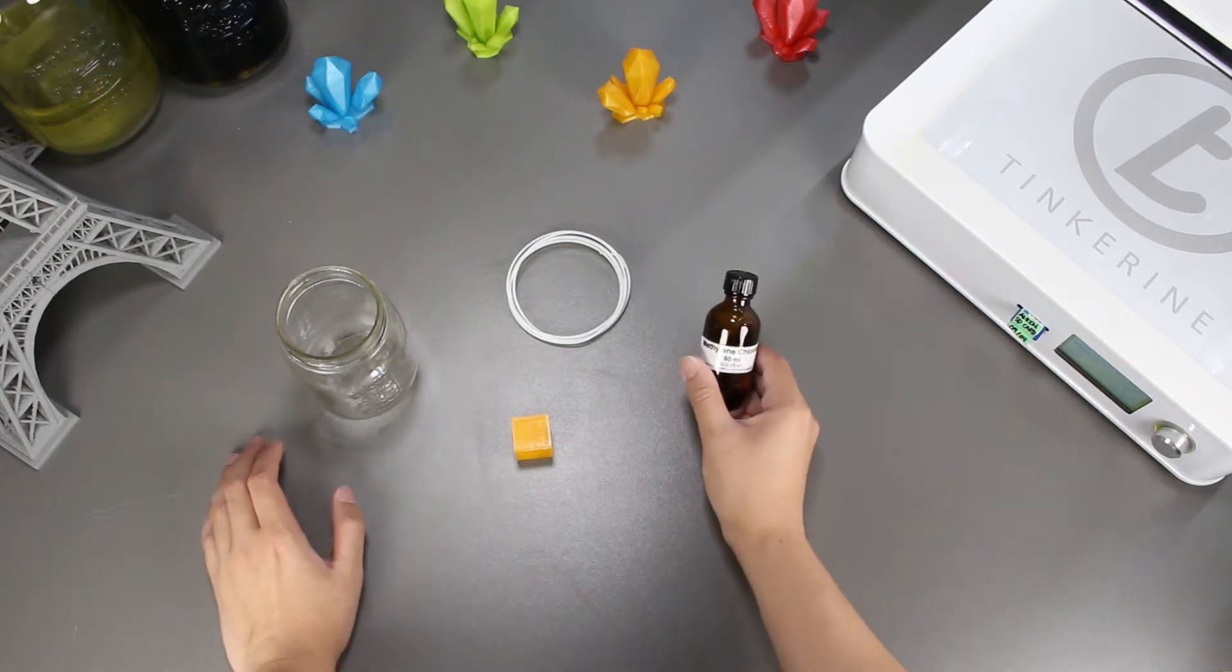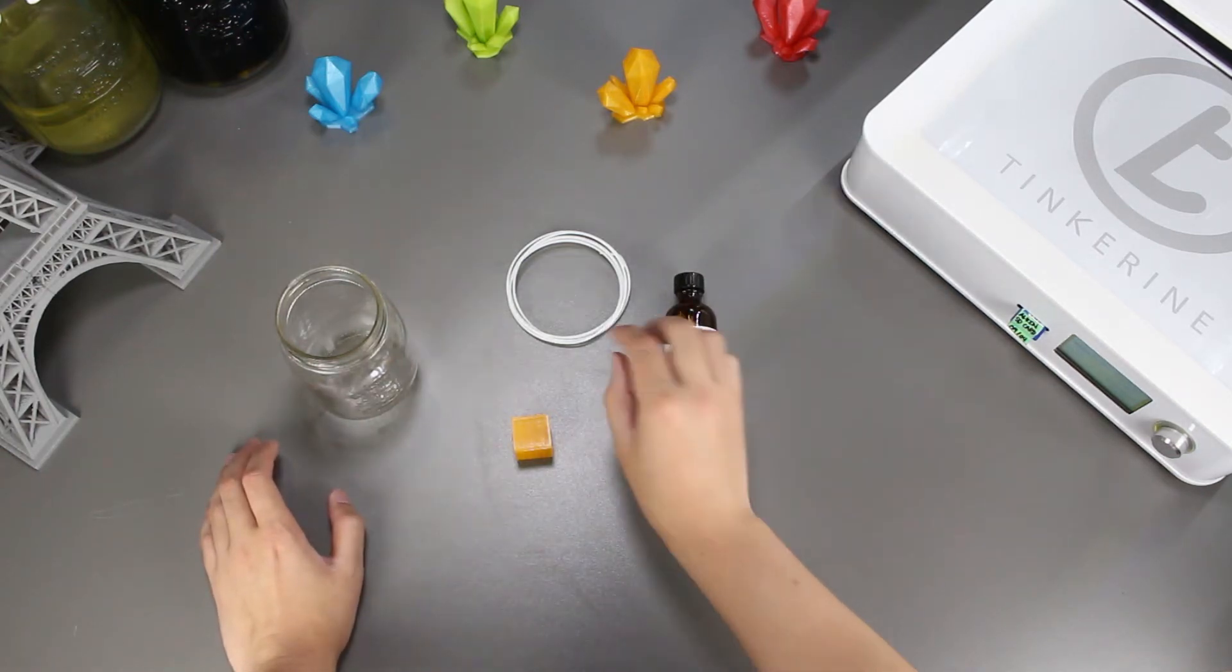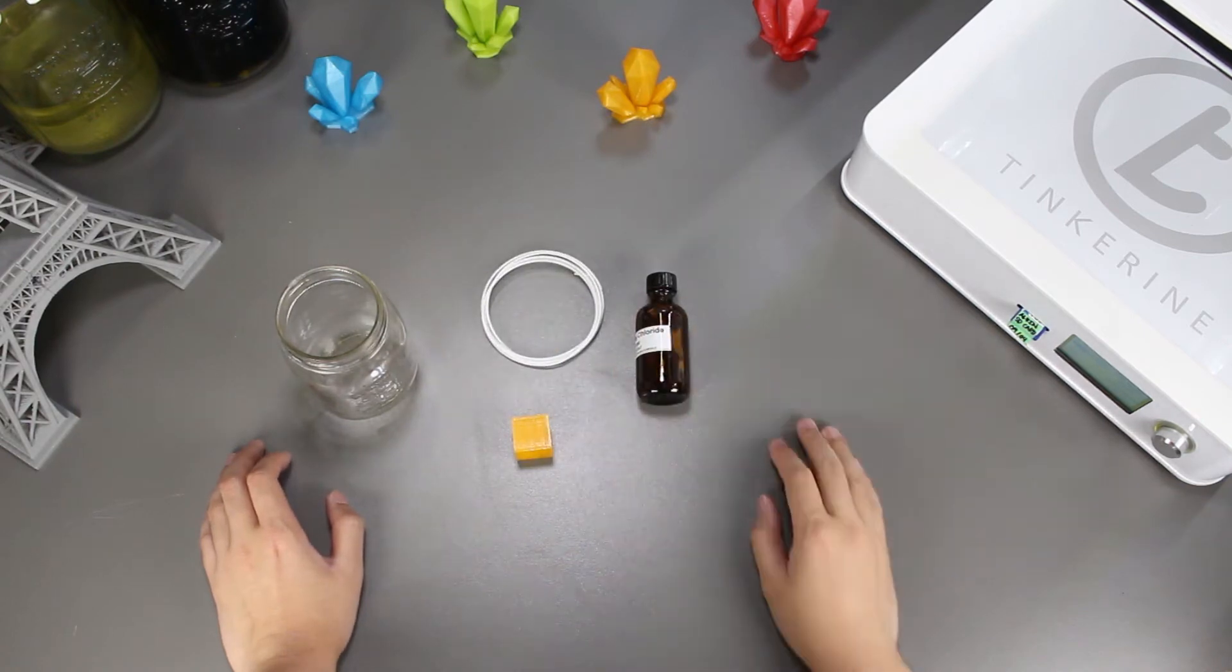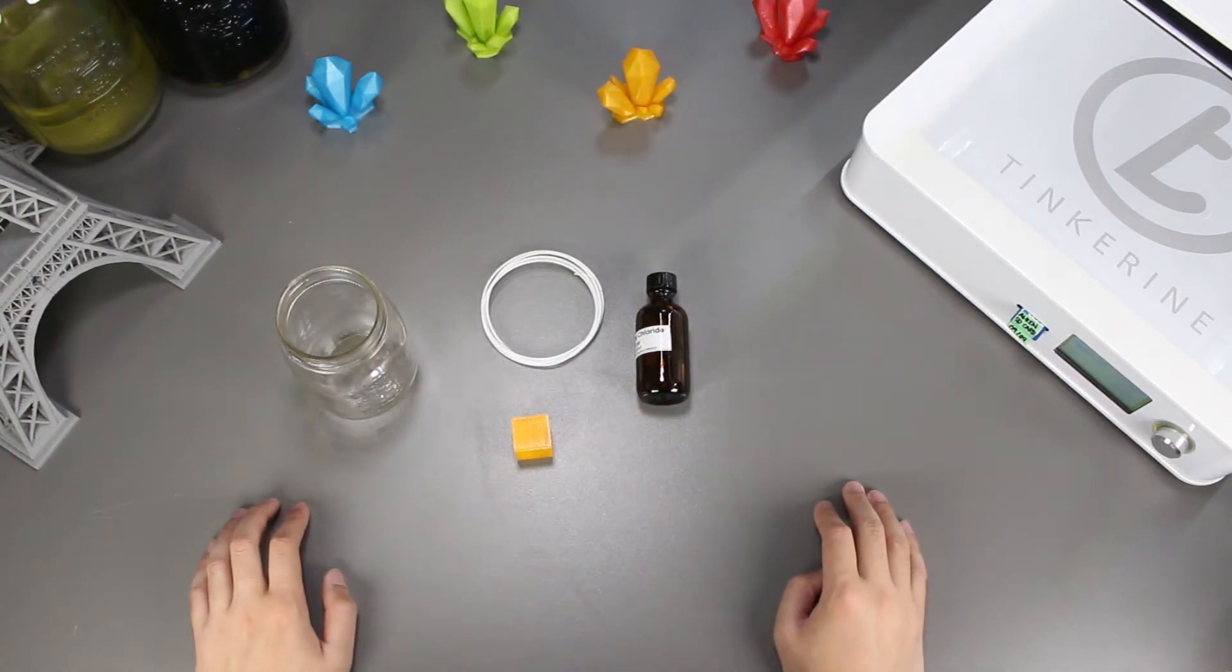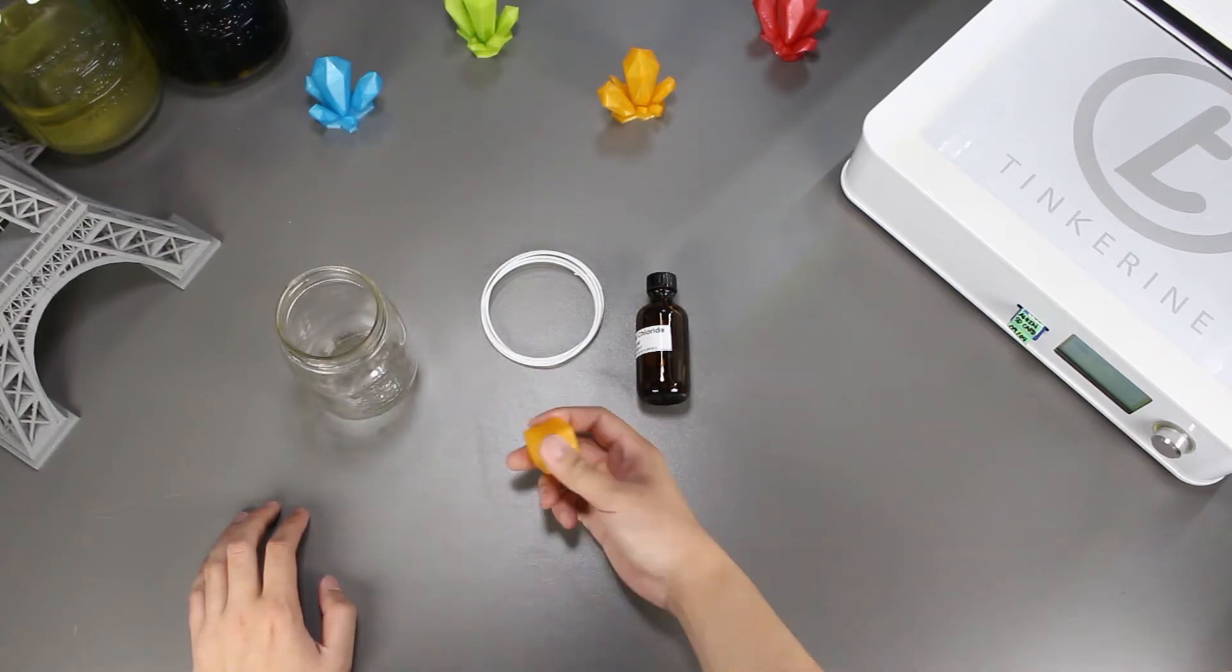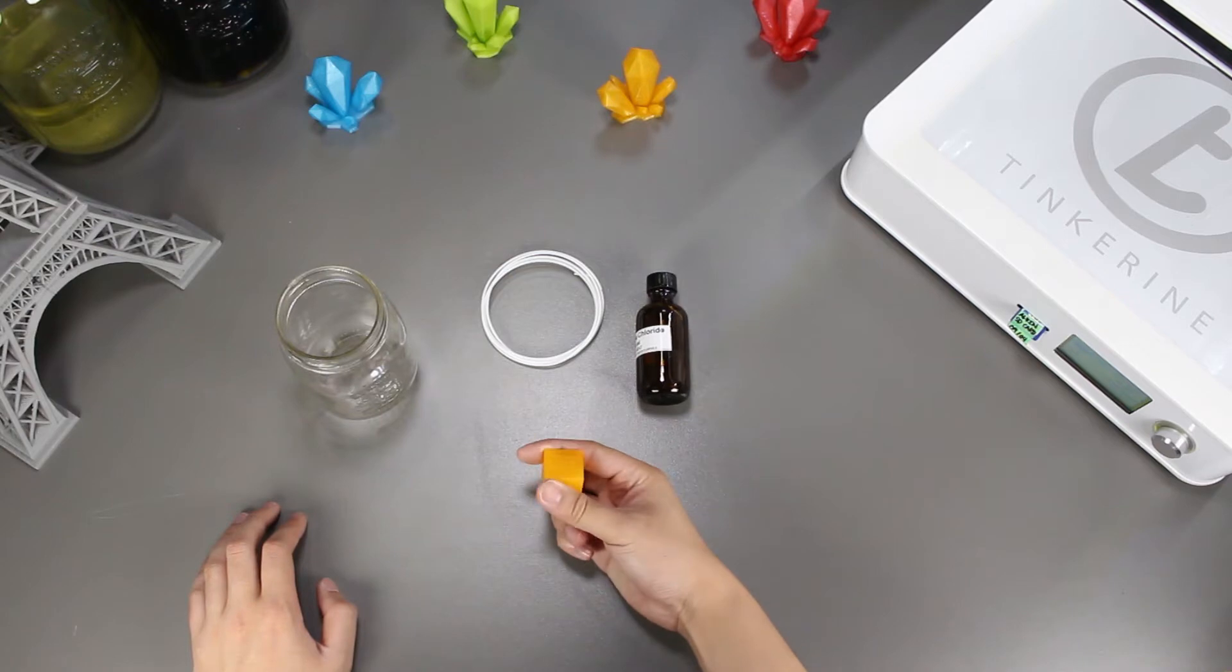Welcome to another episode of Tinkerine Experiments. Today we are going to try and make some PLA paste by melting PLA into methylene chloride and then create a paste-like substance. Afterwards we will apply it onto a PLA model to see the results. Hopefully it will smooth out the print surface and cover up the top layer.